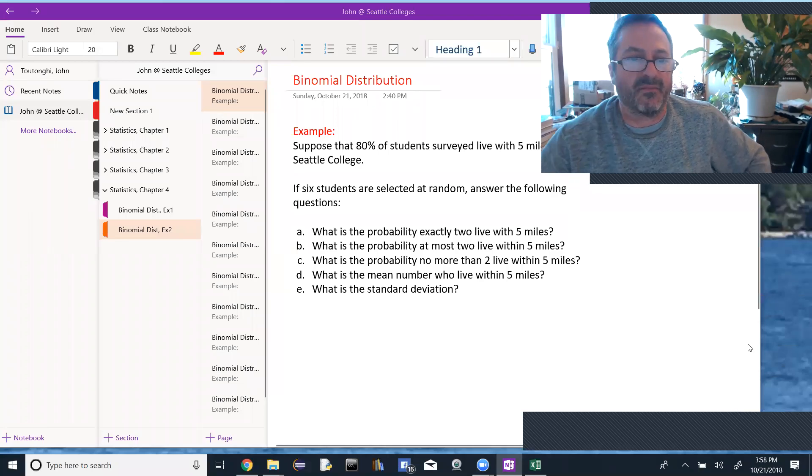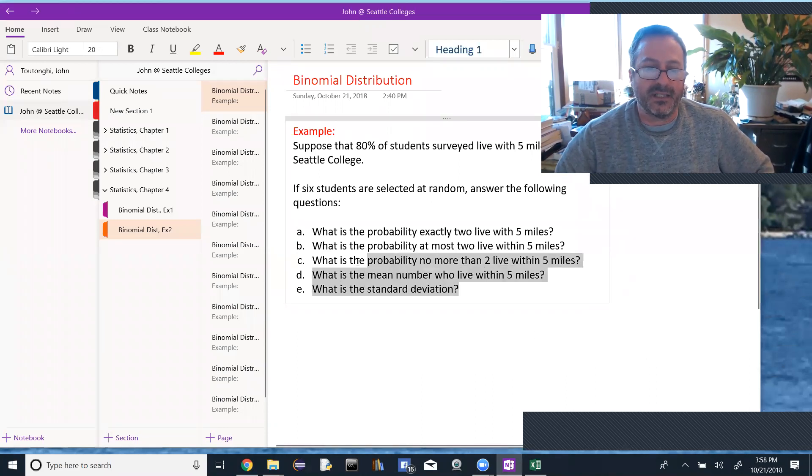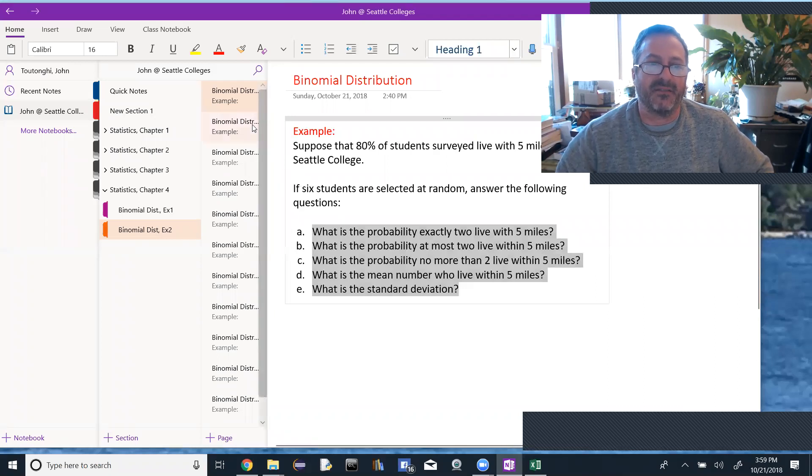Okay, so continuing the last example of a binomial distribution. Suppose that 80% of students surveyed live within five miles of South Seattle College, and if six students are selected at random, answer the following questions. I have five questions here, three about probability, and then the last two about the mean and the standard deviation of this distribution. We're going to go into these parts of the problem in a few minutes, but we first need to show that it's a binomial distribution and set up the binomial distribution PDF table.